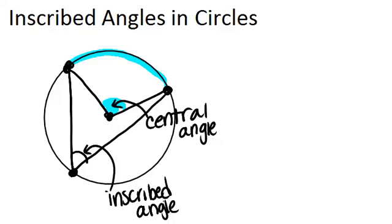And an inscribed angle is always half the measure of the arc. The central angle is the same as the arc. The inscribed angle is half the measure of the arc.